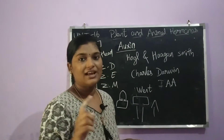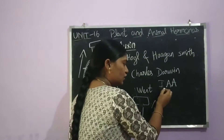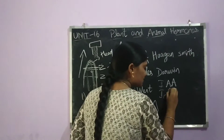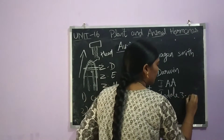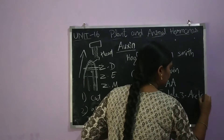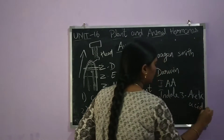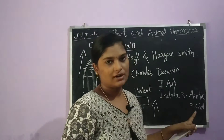IAA stands for Indole-3-Acetic Acid. 'I' is for Indole, so it is Indole-3-Acetic Acid. This is an example of natural auxin.